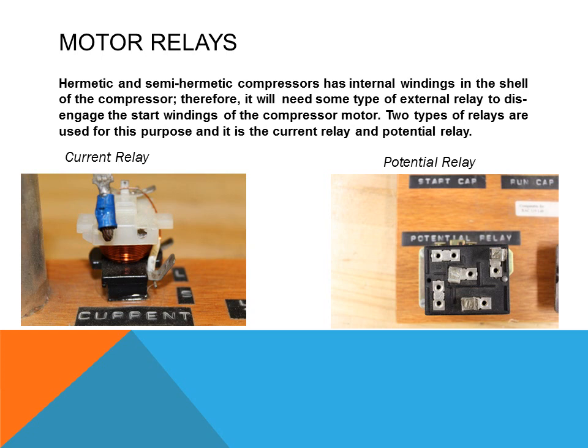Other types of relays you may find relate to compressors. Hermetic or semi-hermetic compressors have internal windings inside the shell, so an external relay is needed to disengage the start windings. Two types are used: a current relay for very small fractional horsepower motors such as those in domestic refrigeration or dehumidifiers, and a potential relay for larger compressors over one horsepower.